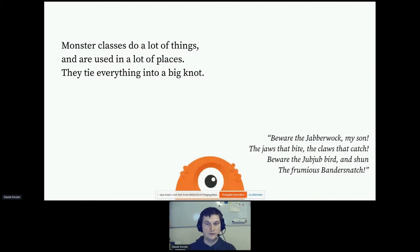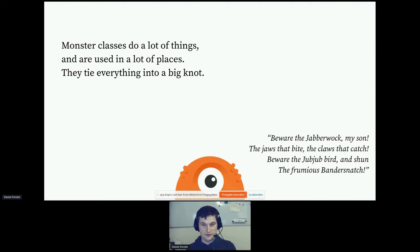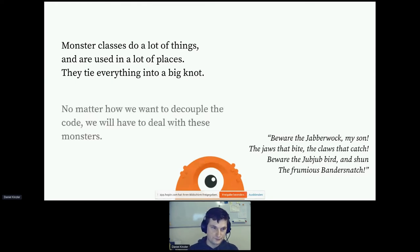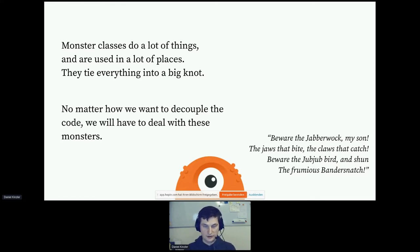So the monsters we are trying to find and slay are classes that do a lot of things and are used in a lot of places. By doing a lot of things they touch a lot of other code, and being used a lot, they effectively tie everything into a big knot. There are lots of different ways to slice and dice the code base — turning it into a structured monolith, extracting bits into separate services, focusing on layering or domains. But no matter what we do, we have to deal with these monster classes; they are always in the way.